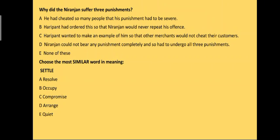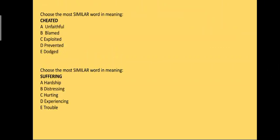Choose the most similar word in meaning. The word is 'settle' — the answer is 'resolve'. Next, choose the most similar word in meaning. The word is 'cheated' — the answer is 'exploited'. Choose the most similar word in meaning. The word is 'suffering' — the answer is 'hardship', option A. Some children might think the answer will be a word ending in '-ing', but it is not like that — the answer is hardship.